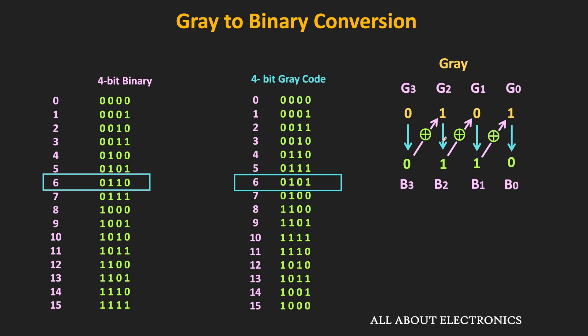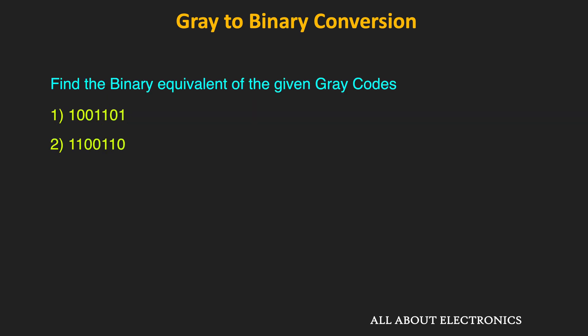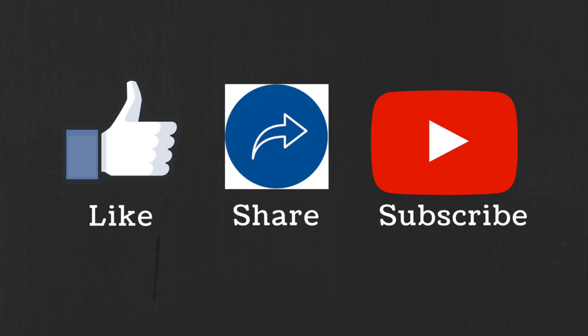That is how we can find the equivalent binary number for a given gray code. Try to find the binary equivalent of the given gray codes and let me know your answer in the comments. I hope in this video you understood about gray code and how to perform binary to gray code and gray code to binary conversion. If you have any questions or suggestions, let me know in the comment section below. If you like this video, hit the like button and subscribe to the channel for more such videos.